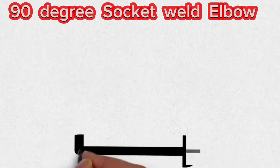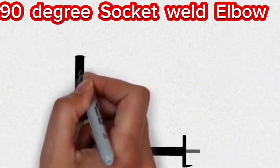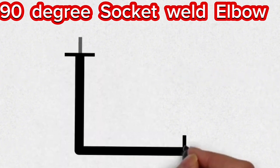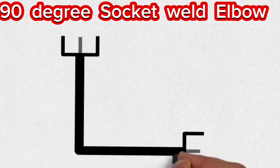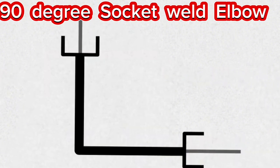This symbol, which is used in pipe isometrics, is the isometric symbol of the 90-degree socket weld elbow. These 90-degree elbow symbols are used in socket weld pipeline isometrics.